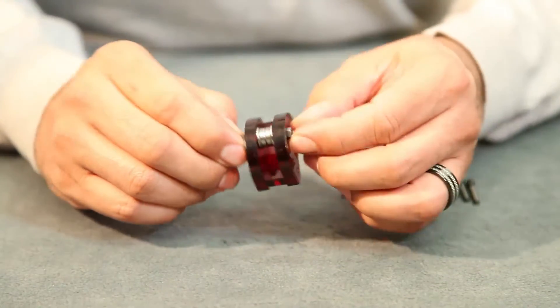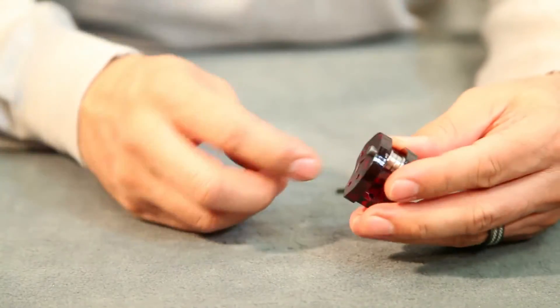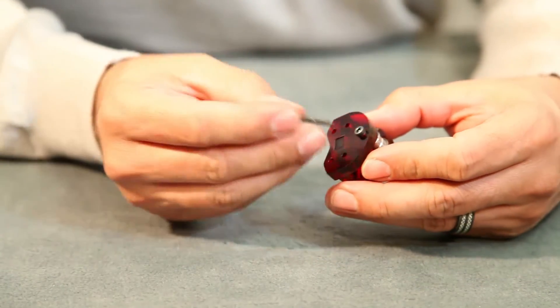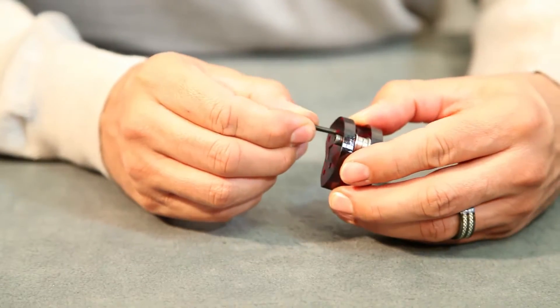Once you have that together, now you install on the rest of the four holes, the same side as the first bolt, you're going to install the other four.